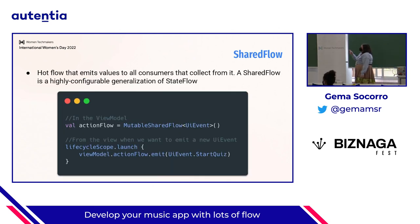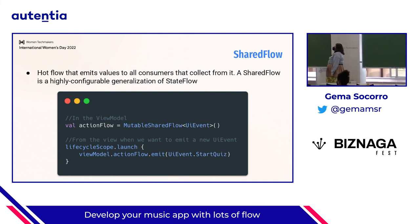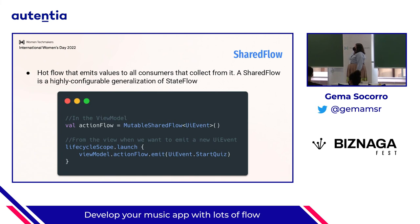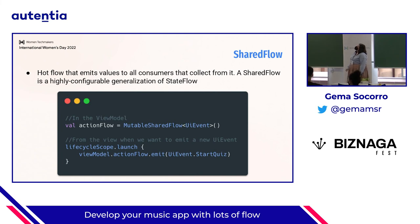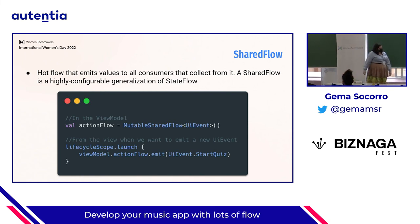But for the UI events that the user is going to send us, we are going to use another class: SharedFlow or MutableSharedFlow. In this case, it does not have the conflated property. Why? Because we don't want to miss a user interaction. So if the user does the same interaction twice, we want to process all of them. That is why we use SharedFlow.